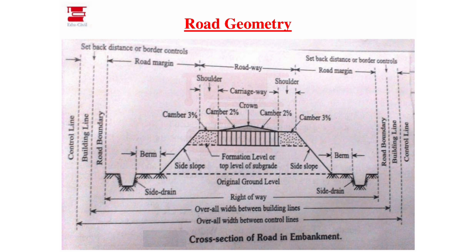We call it the setback distance on both sides. We call it the embankment, side drains, berms, and two sealings. The berms are the horizontal distance elements. For the embankment section, there is a carriageway and two shoulders forming the roadway, and the road margin lies to the right-of-way. The road margin includes one side drain.